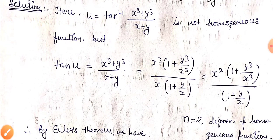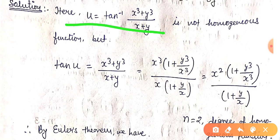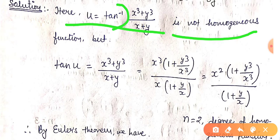So u equals tan inverse of (x³ + y³) divided by (x + y). From here you can see that u is not directly a homogeneous function, because we have a trigonometric function — the inverse tangent — wrapping around what is a homogeneous expression.